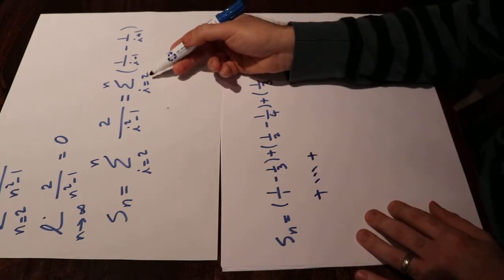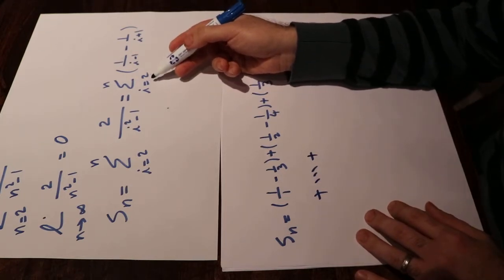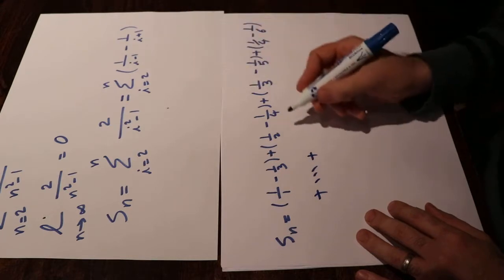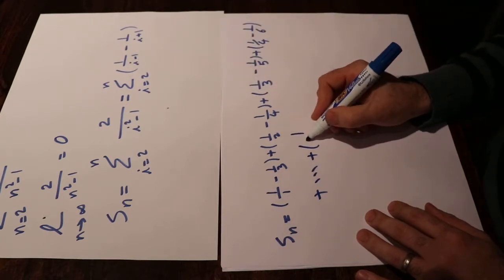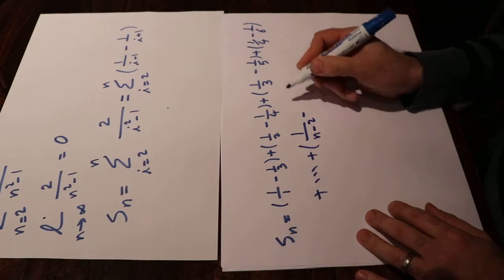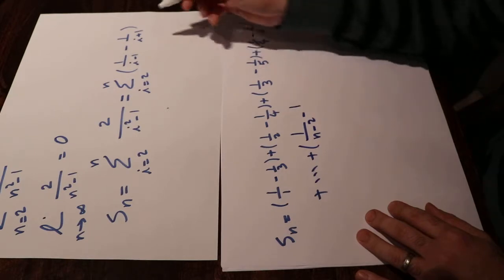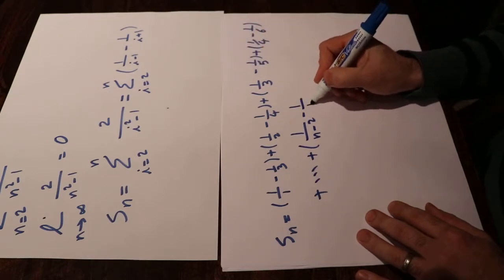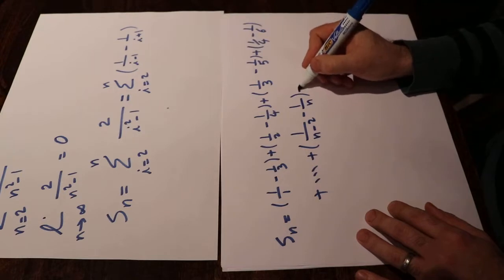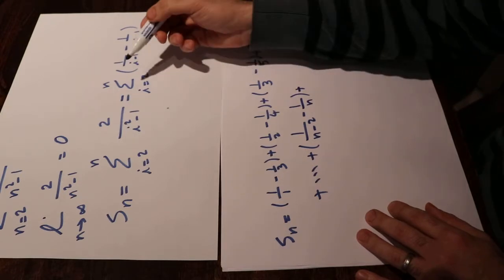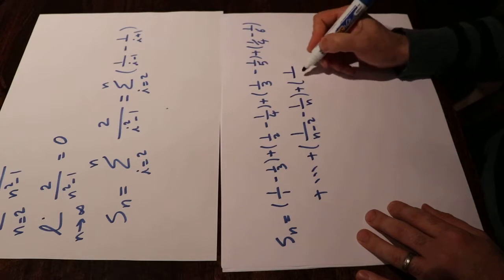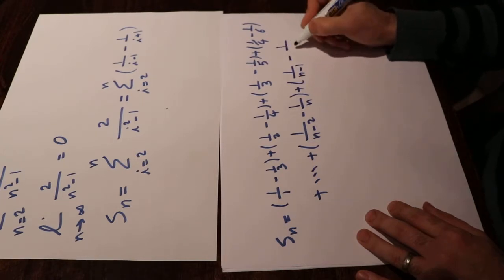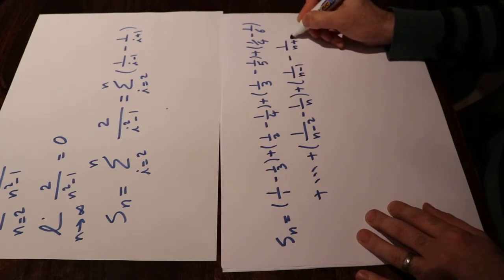For i equal to n minus 1, that will be 1/(n−2) minus 1/n. And the last term, i equal to n, will be 1/(n−1) minus 1/(n+1).